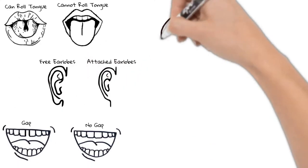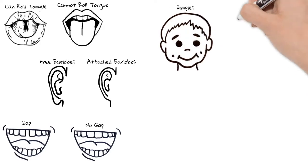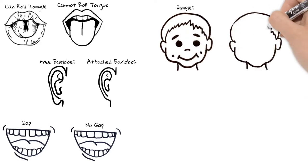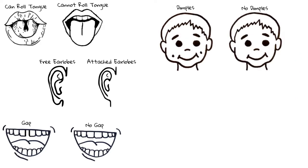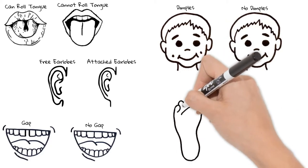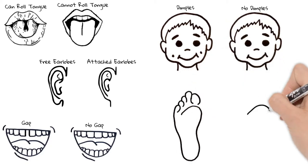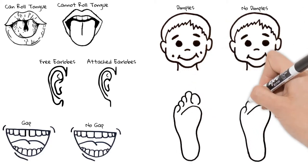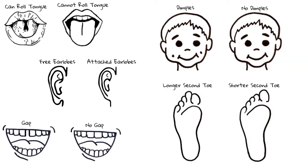Do you have dimples on your face when you smile? Lastly, look at your toes — is your second toe longer or shorter than your big toe? These are all traits, or genes, passed on to you from your parents.